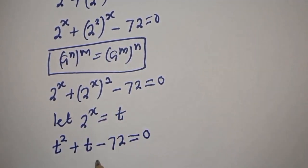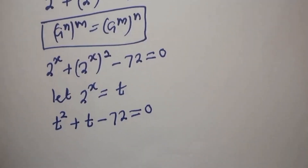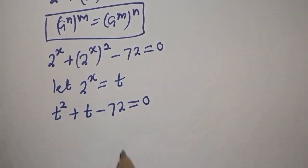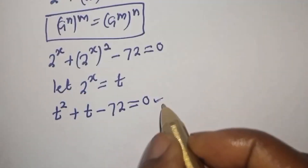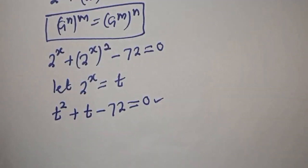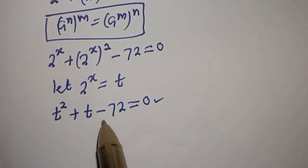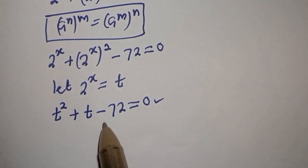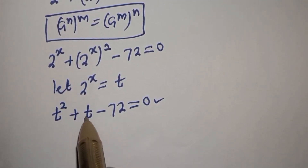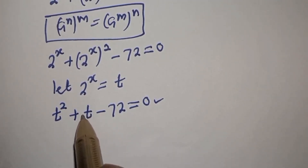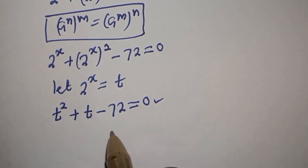If you rearrange this, it is a quadratic equation which can be solved using the factorization method. In the factorization method, the product must be equal to minus 72 and the sum must be equal to 1, which is the coefficient of t.